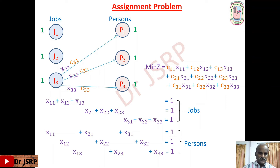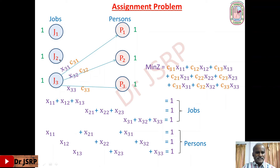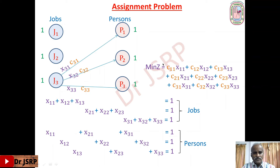All the decision variables are binary, meaning they are 0 or 1. If the corresponding assignment is given, the value is 1; otherwise the value is 0. So here the decision variables are binary.